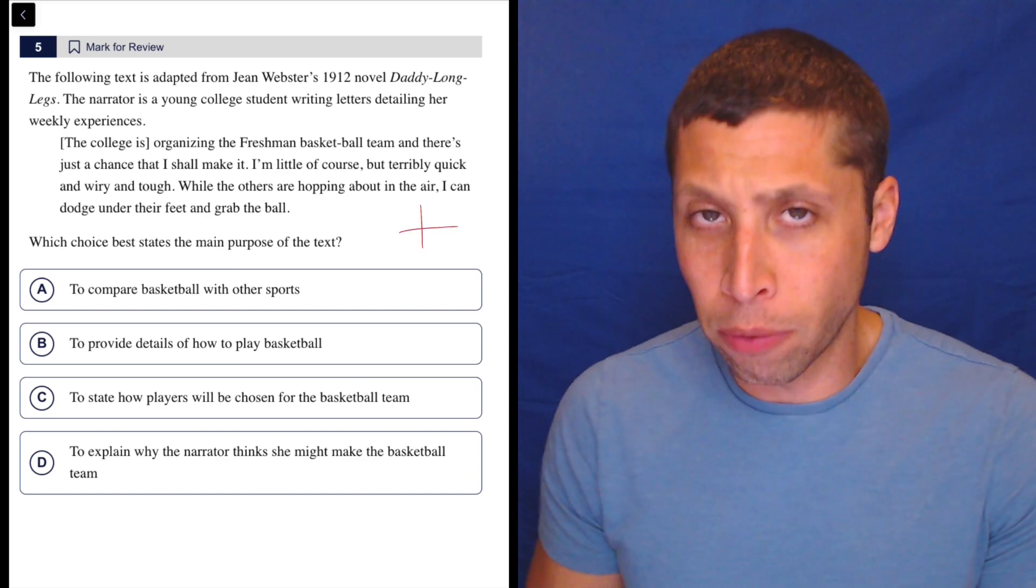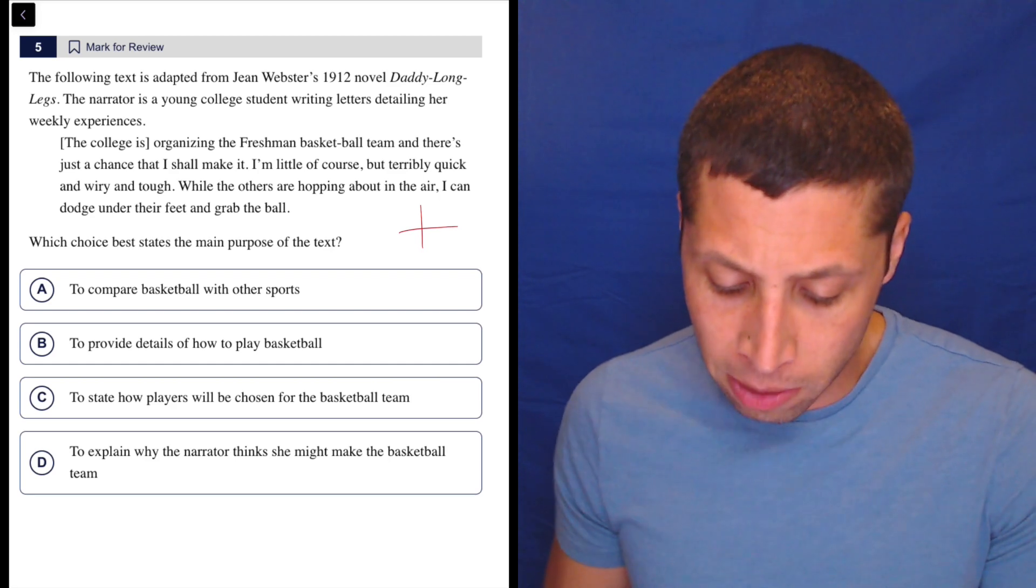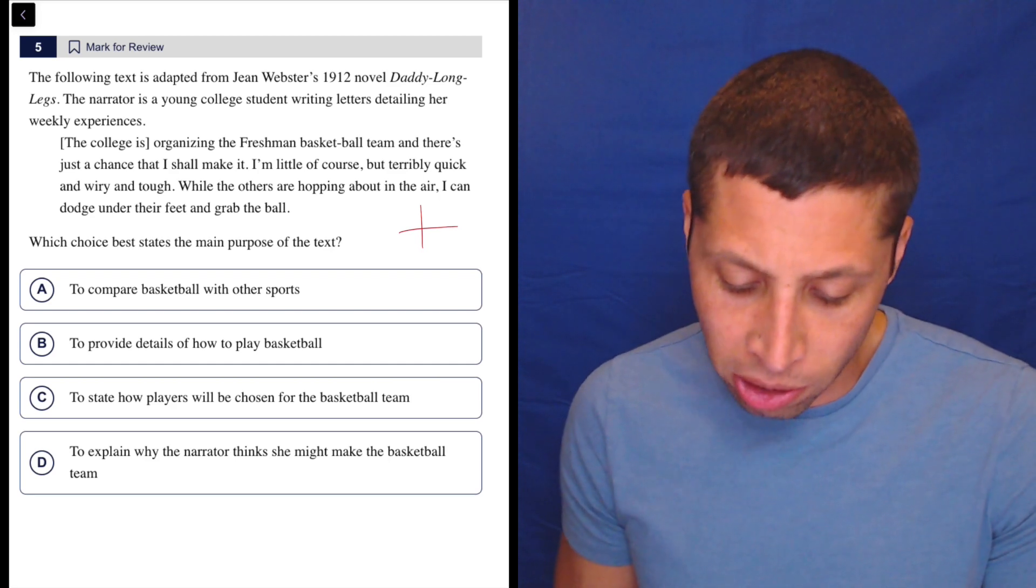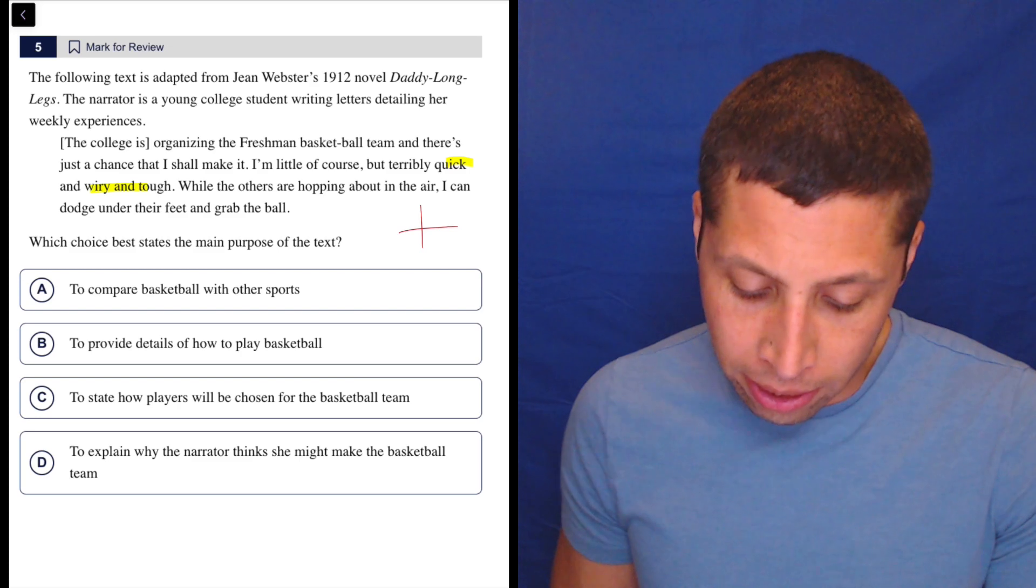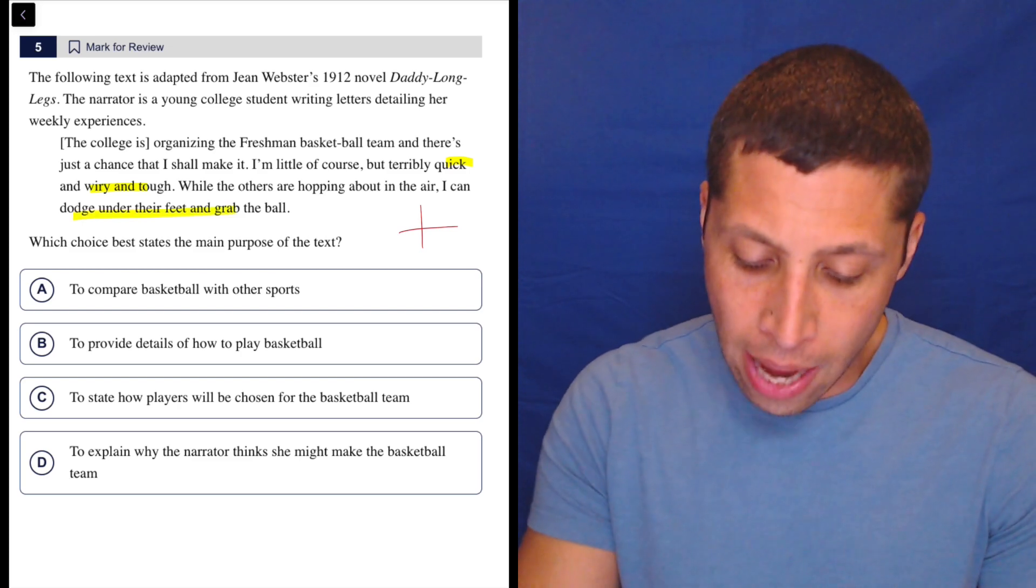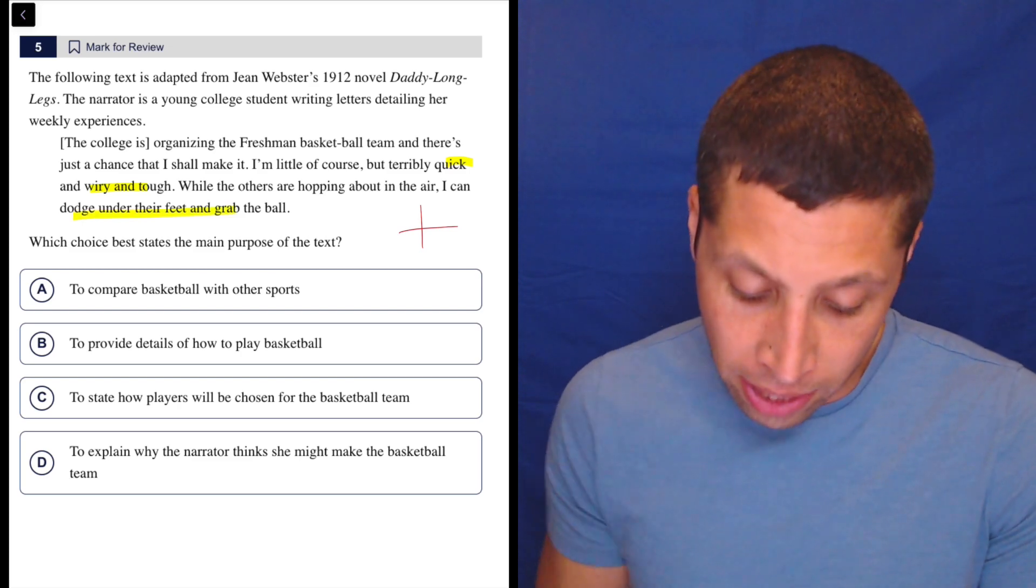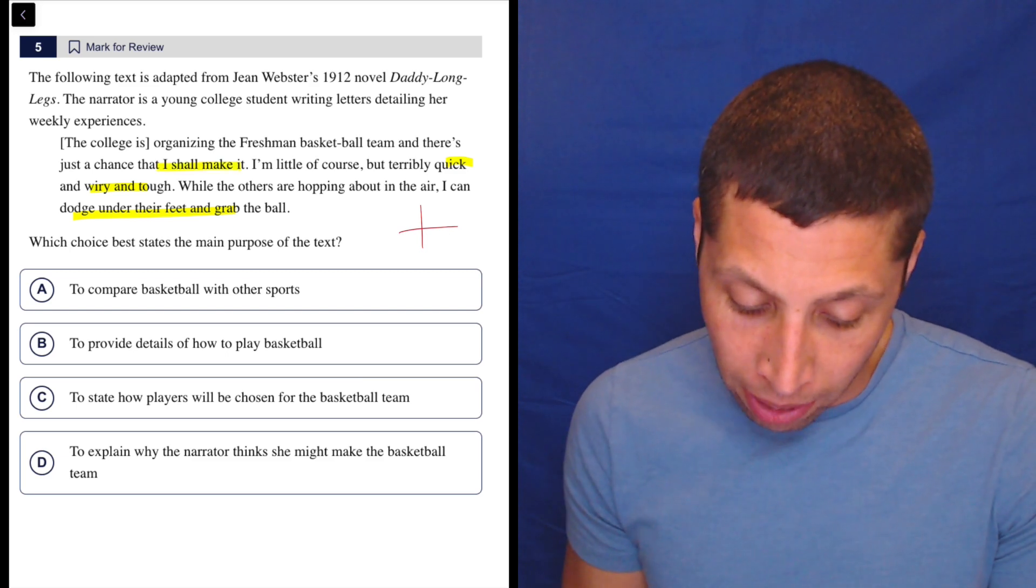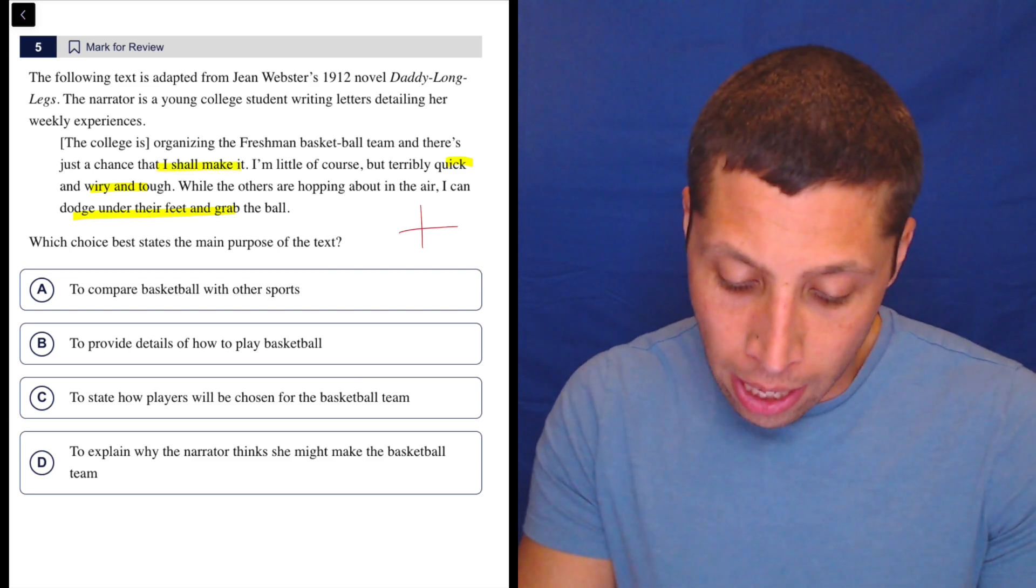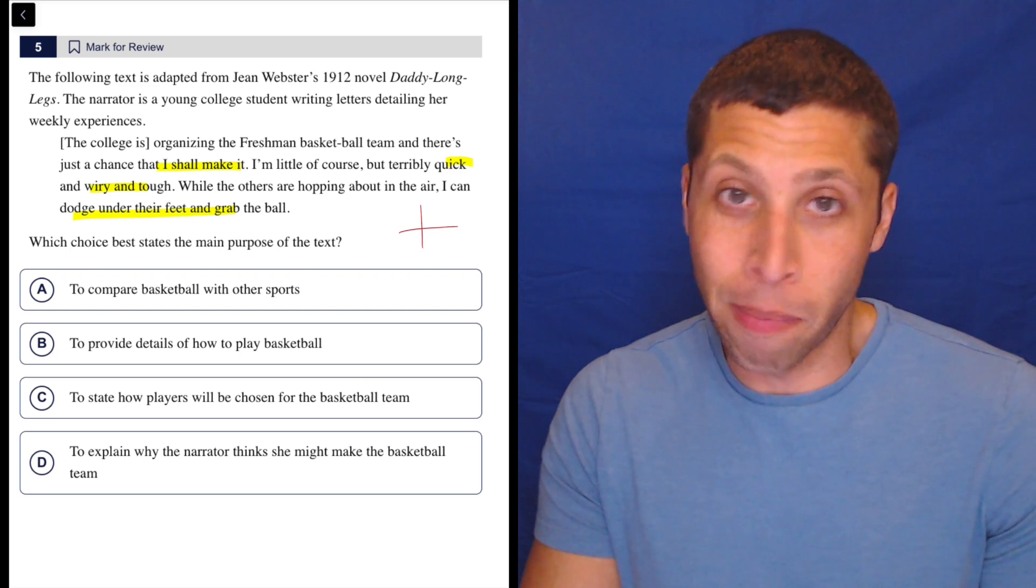So this seems pretty positive to me. She's little but she's quick, wiry, tough. She can dodge under their feet, so it sounds like she's kind of optimistic. She even says there's a chance I shall make it. So let's take a look. This is just her saying why she might make the team.